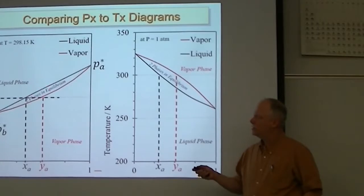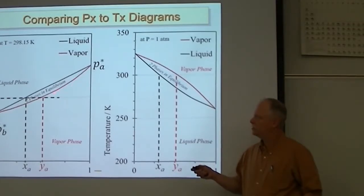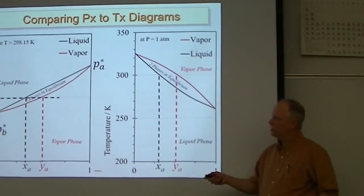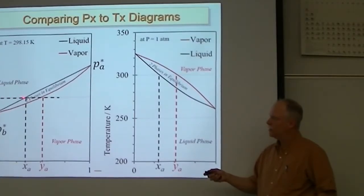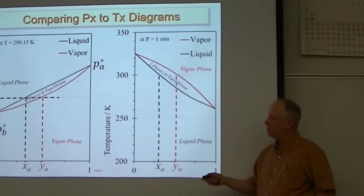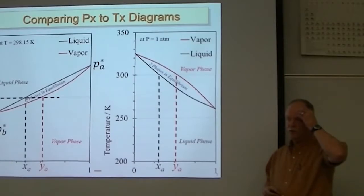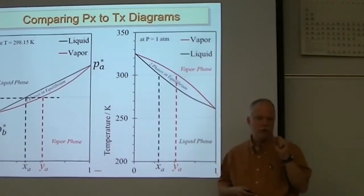There are two lines on here. One indicates the composition of the liquid; the other indicates the composition of the vapor. So whenever this mixture is boiling — say at one atmosphere of pressure — the liquid boils at this composition. So I would go to the black line and find that composition, and that composition has a boiling point of 298.15. That composition, and only that composition, has a boiling point of room temperature.